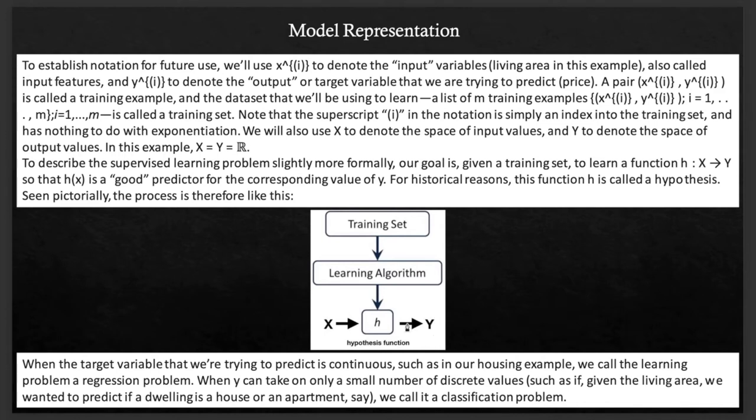When the target variable that we are trying to predict is continuous, such as our housing prices example, where the price changes continuously for different values, we call the learning problem a regression problem, where the output changes as the variable changes.